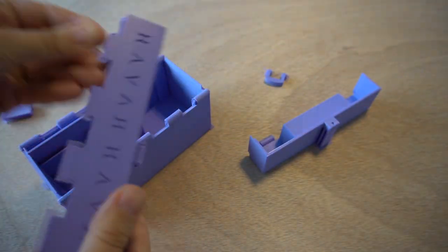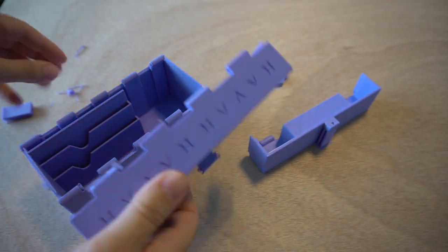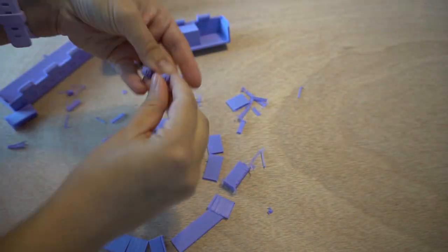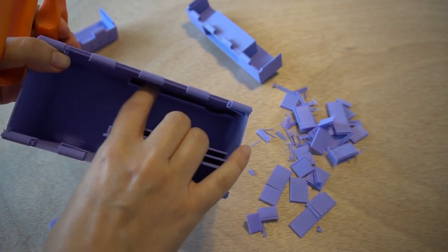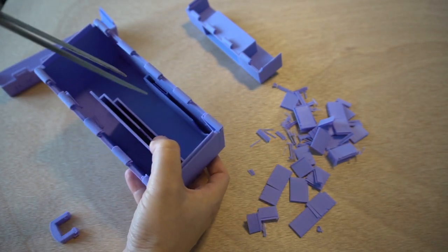Remove the supports including inside the hinges and latches. Most supports can be easily removed by hand. Supports inside the card holder and under hinges can be pried out with scissors.